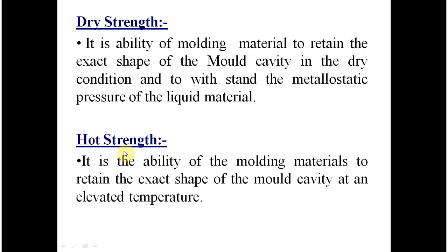Hot strength is the ability of the molding material to retain the exact shape of the mold cavity at an elevated temperature. As soon as moisture is eliminated, the sand reaches a high temperature. When the metal in the mold is still in liquid state, the strength required to hold the shape of the cavity is called hot strength.